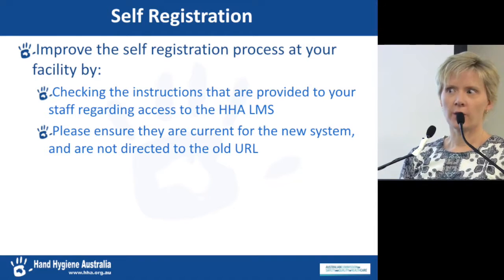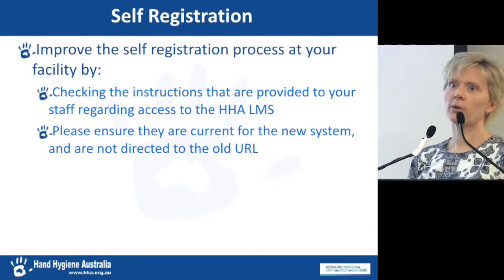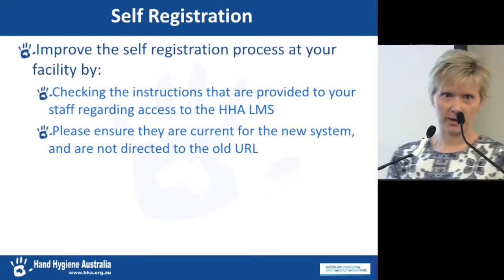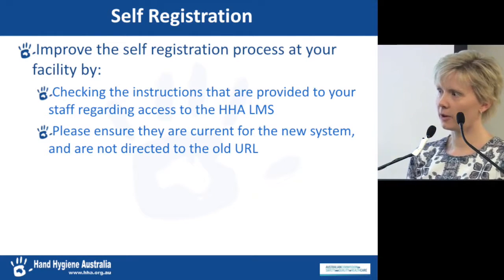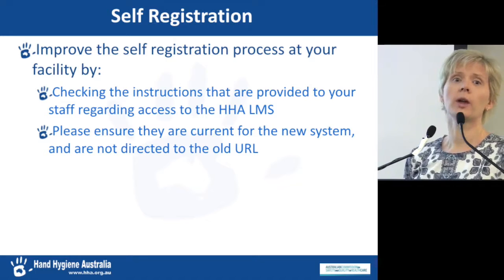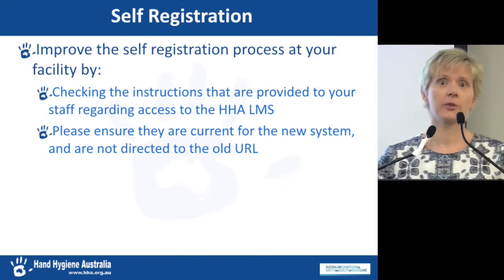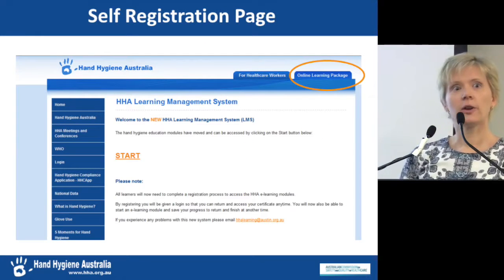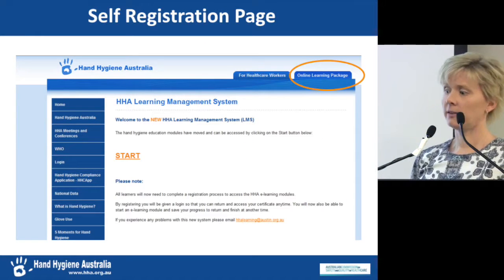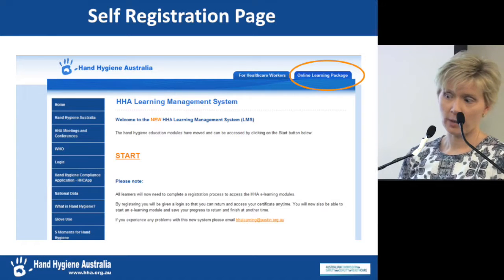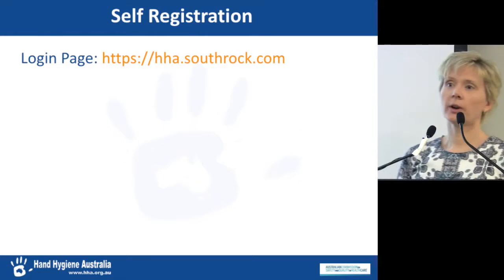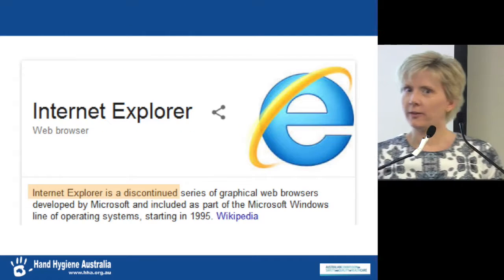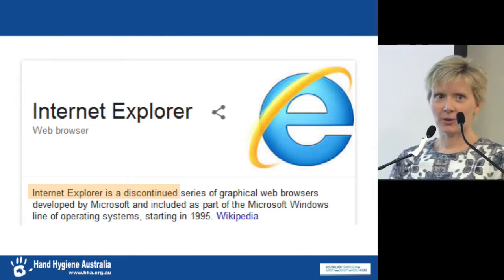Some troubleshooting for your organisations: check where you are directing your users. If you're asking people to complete a module in the Hand Hygiene Learning Management System, please check where you are directing them, because some people are still directing to the old URLs. You can direct them in two ways: via the Hand Hygiene Australia site selecting the online learning package tabs, or directly to the login page for the learning management system.